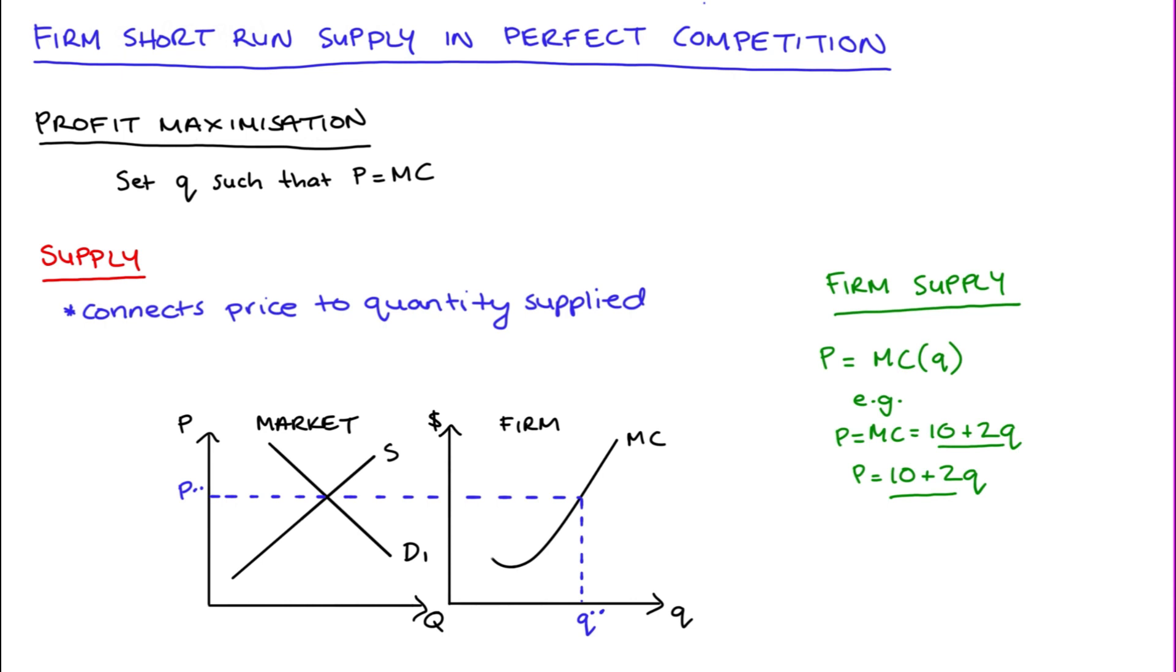Similarly, for lower prices, maybe demand decreases to d2, for instance, then the firm would meet that change in the price by reducing the quantity that they produce to q prime.